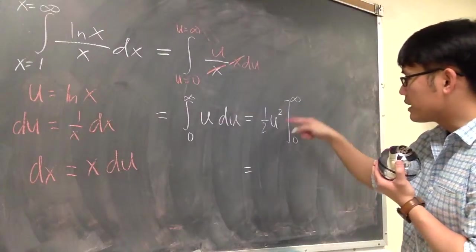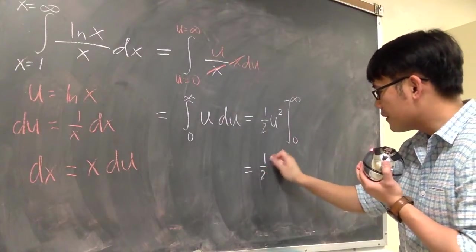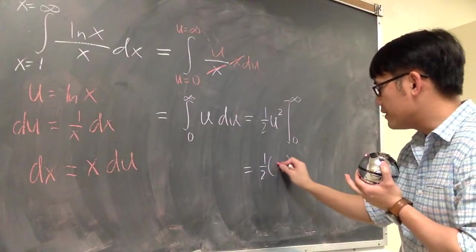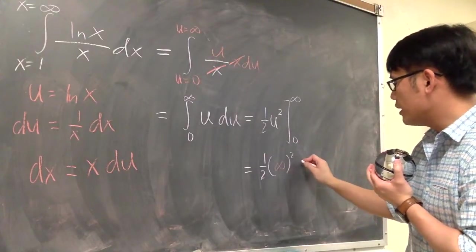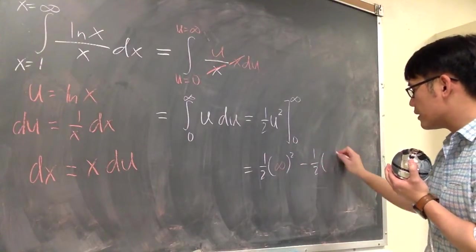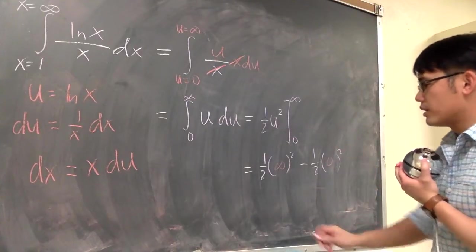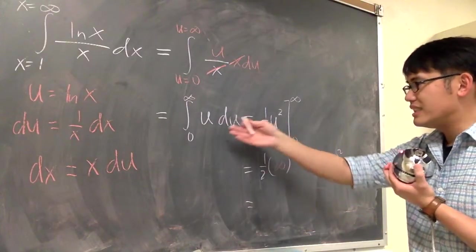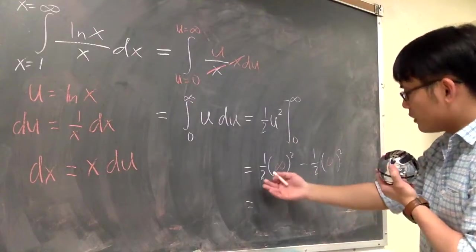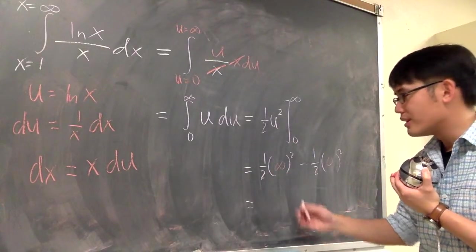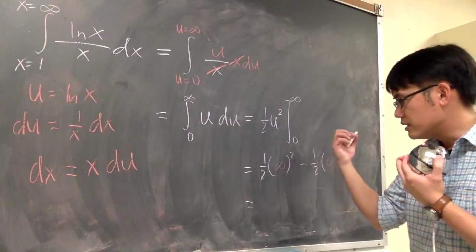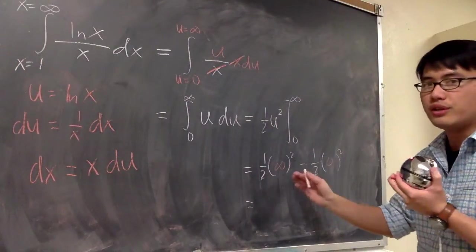What you do is plug in infinity. You get 1 half, and then you have the infinity, square, and you subtract 1 half. You plug in 0 for the u, so you have 0, square. But as I said, you can see it already. After you go through the computations for the integral, infinity squared is infinity divided by 2 is still infinity.